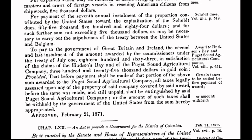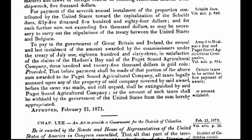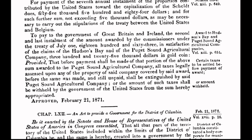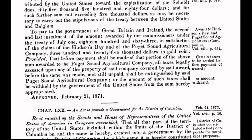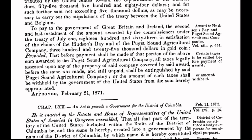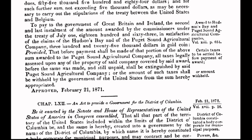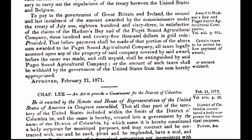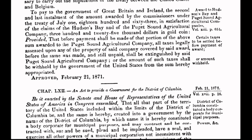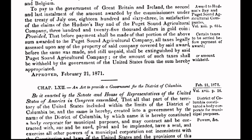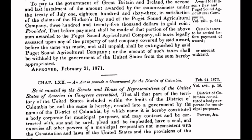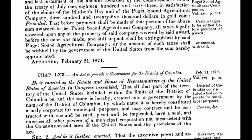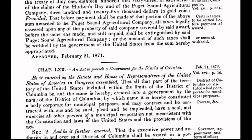With no constitutional authority to do so, Congress creates a separate form of government for the District of Columbia, a 10-mile-square parcel of land. The act was passed when the country was weakened and financially depleted in the aftermath of the Civil War. It was at that time a strategic move by foreign-interest international bankers, who were intent upon gaining a stranglehold on the coffers and neck of America.